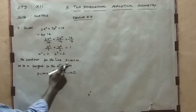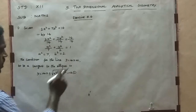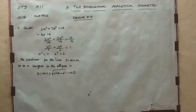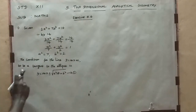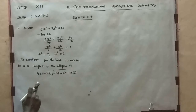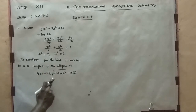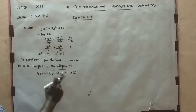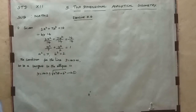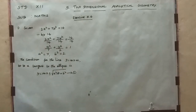Now the condition for the line y = mx + c to be a tangent to the ellipse is y = mx ± √(a²m² + b²). Now passing through the point (5, 2).